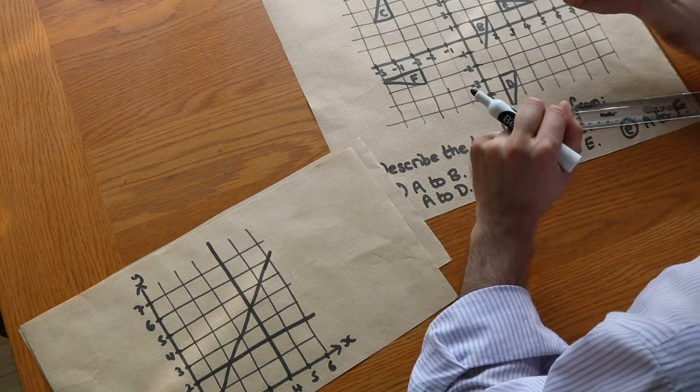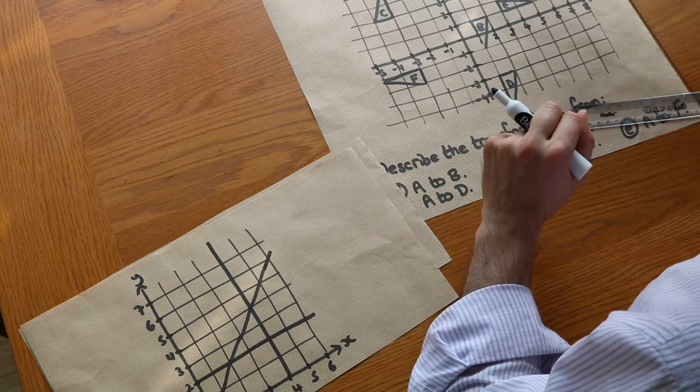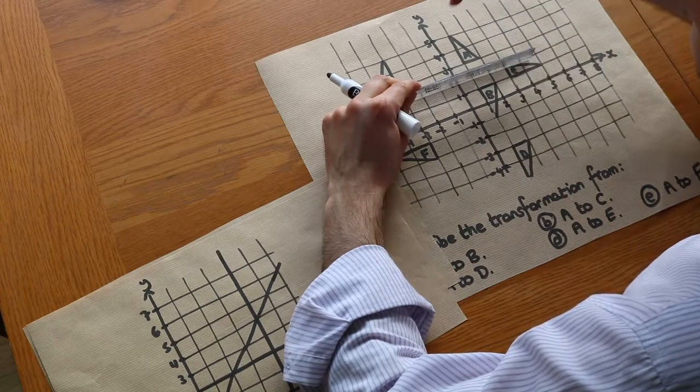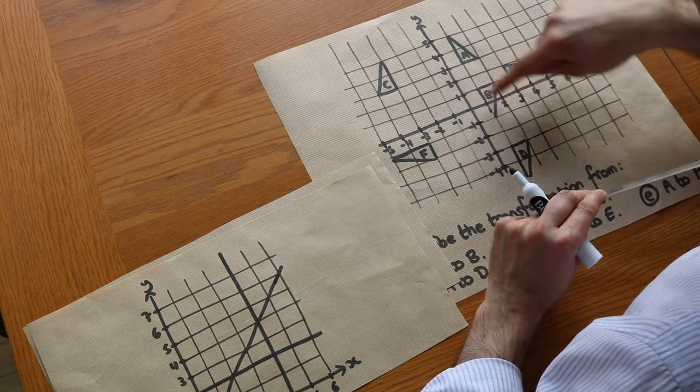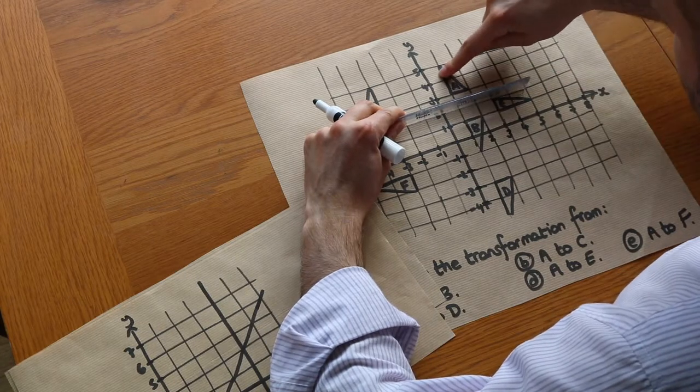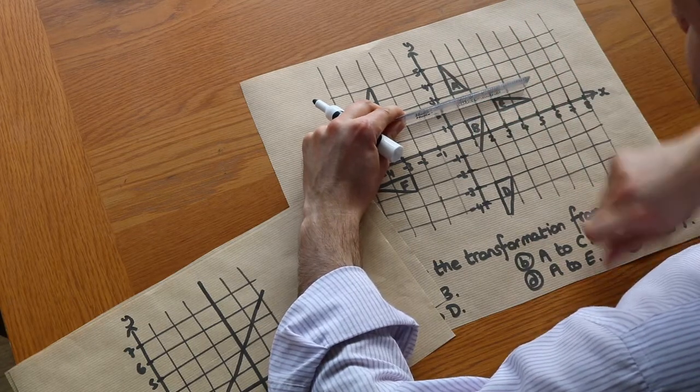We've got reflections, translations, rotations, enlargements. And a reflection is when something is flipped in a particular line. So for example, to get from A to B, can you see there's like a mirror line here and A is being reflected, it's being flipped to get to B here.